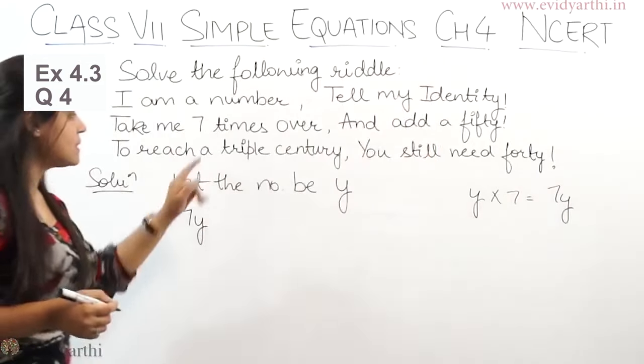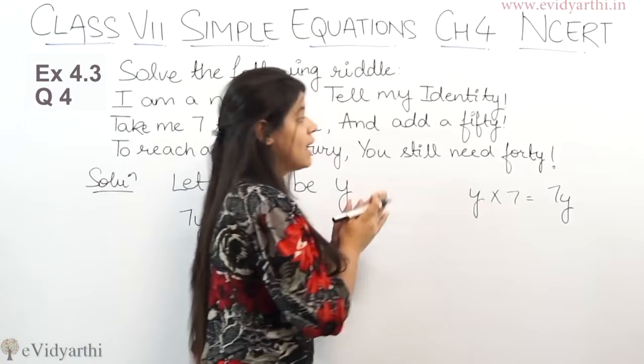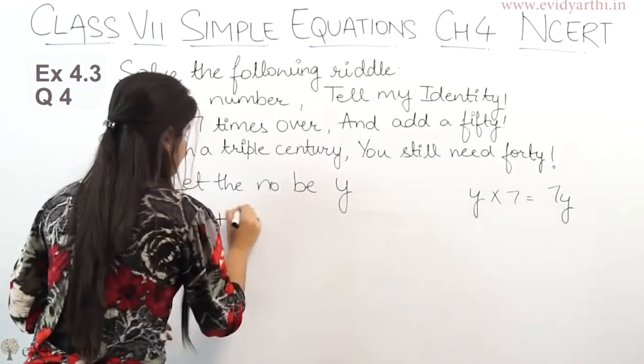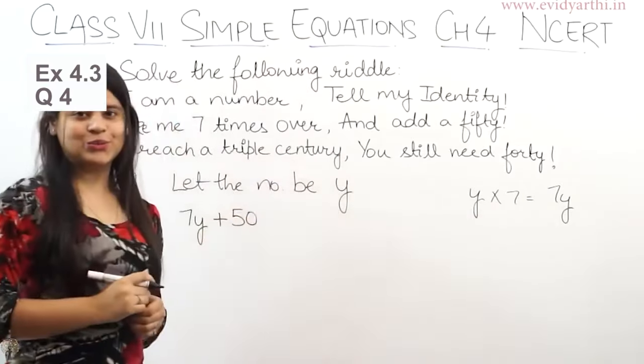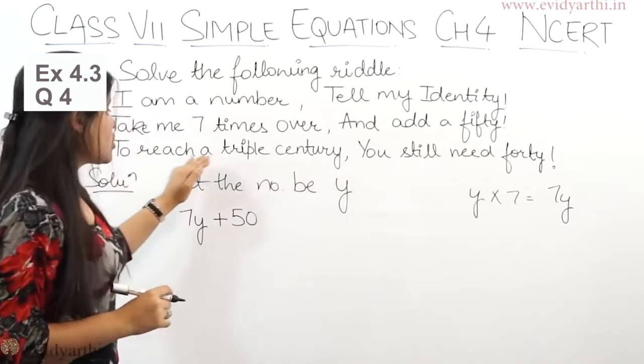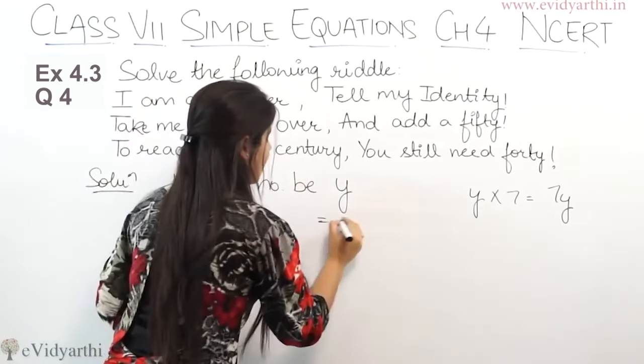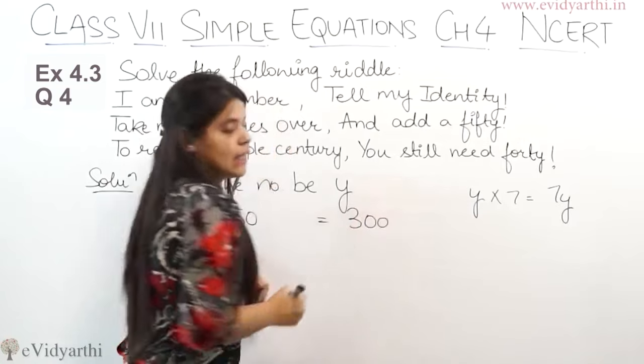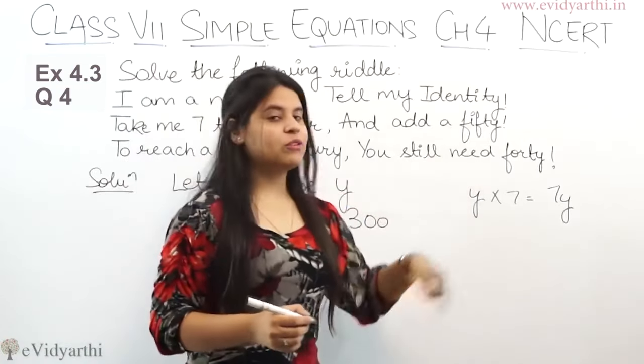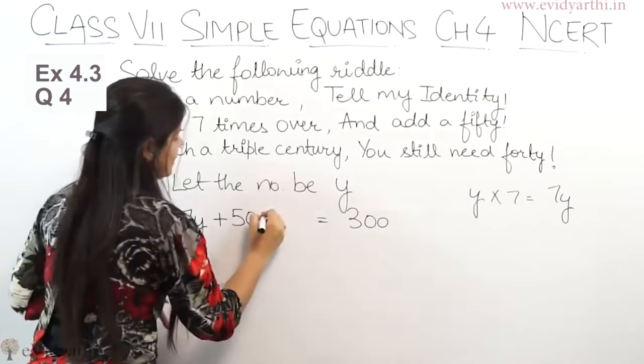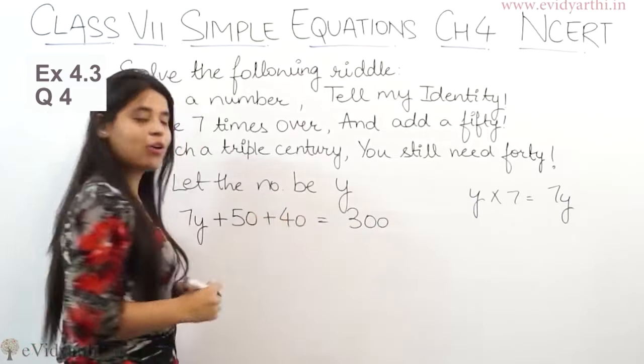So take me 7 times over and add a 50 and add a 50. Okay. To reach a triple century, now if you have triple century karni hai, you still need 40. 40 or add karna padega.